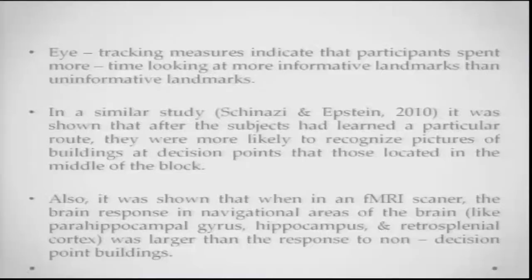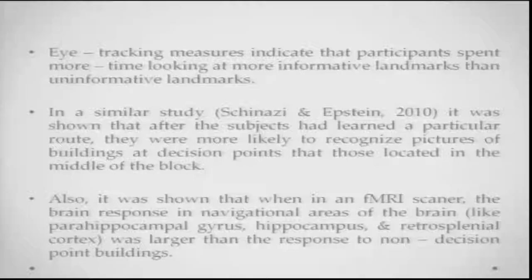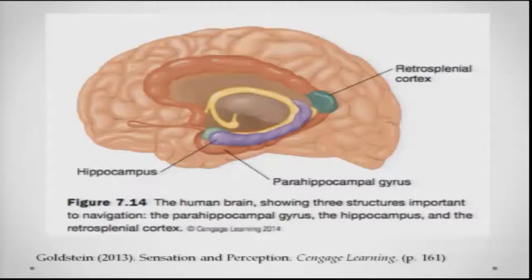When participants were placed in an fMRI scanner, it was found that brain responses in navigational areas — the parahippocampal gyrus, hippocampal gyrus, and retrosplenial cortex — were much larger to informative landmarks than to non-informative landmarks or non-decision building points. This tells us the brain is constantly tracking important sources of information in our interaction with the environment so it can plan and prepare for navigation and movement.